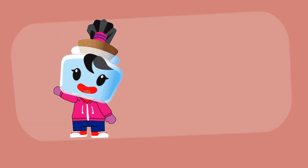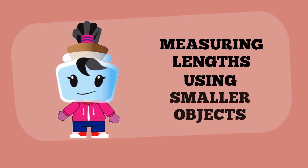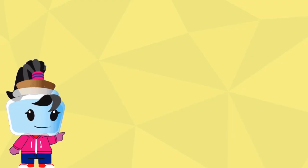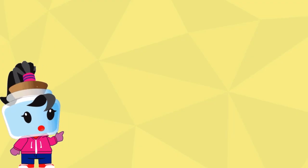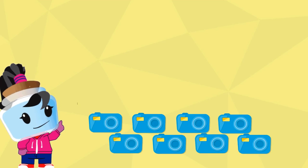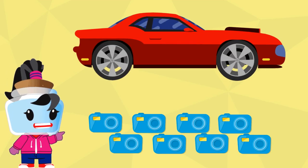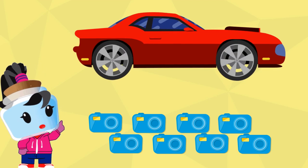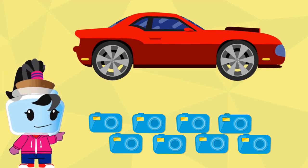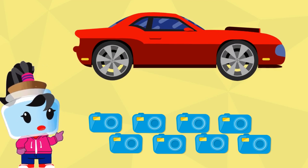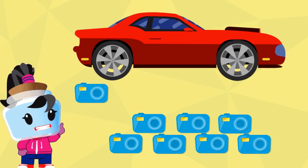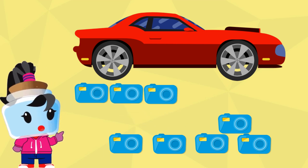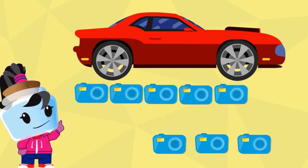Now let's move on to measuring lengths using smaller objects. For our first example, use the cameras to measure the length of the car. Let's line up the cameras below the car and count: one, two, three, four, five, and six.